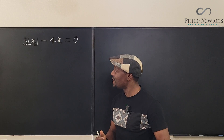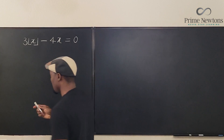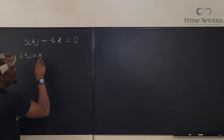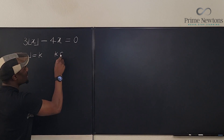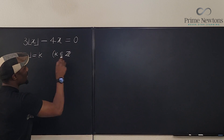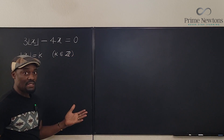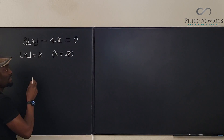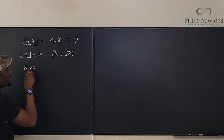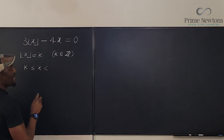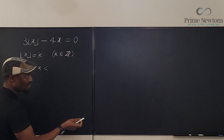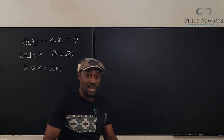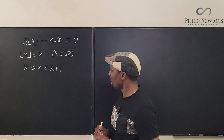Let's start by defining what this is. We say that the floor of x is equal to k, where k is an integer. We don't know if k is positive or negative — it doesn't matter, but it's an integer. If k is the floor of x, then we know that k is less than or equal to x, and x is less than the next integer after k, which is k plus one.